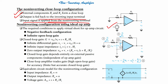For the non-inverting op-amp using ideal configuration, the required conditions to apply virtual short are negative feedback and infinite open-loop gain. The closed-loop gain G equals VO/VI = 1 + R2/R1. Because of the virtual ground concept, whatever voltage is at the non-inverting terminal, the same voltage appears at the inverting terminal.